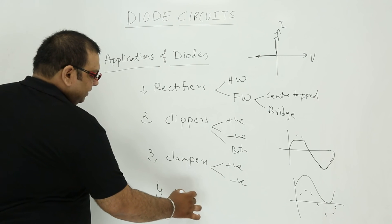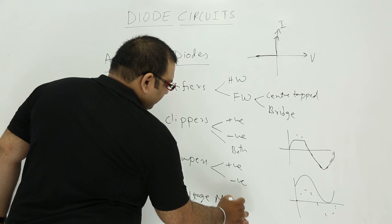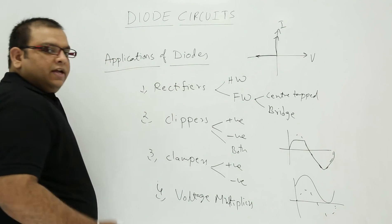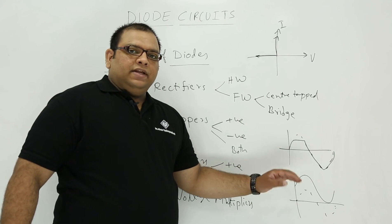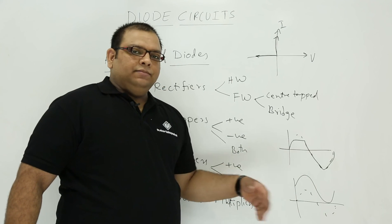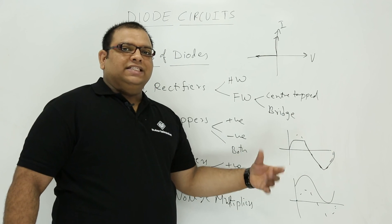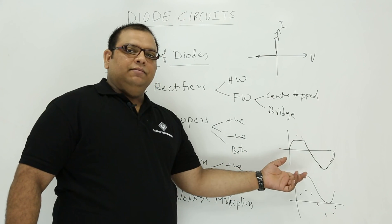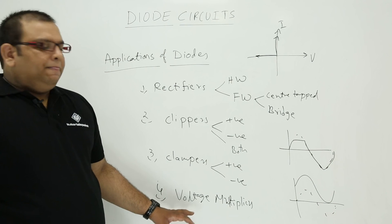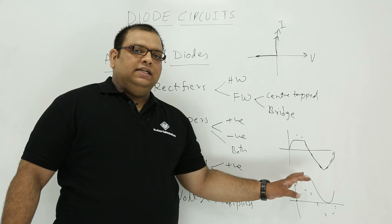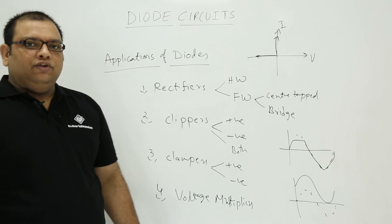The last application is voltage multipliers. Suppose the input peak voltage is Vm and you want to make it 2Vm — we use a voltage doubler. To make it 3Vm we use a voltage tripler, and to make it 4Vm we use a voltage quadrupler. The voltage multiplier gives an output peak voltage that is a multiple of the input. These are the main applications of diodes.